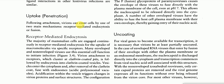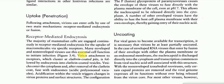Receptor-ligand interactions in other lentivirus infections are similar. Uptake: Following attachment, virions can enter cells by one of two mechanisms — receptor-mediated endocytosis or fusion. The majority of mammalian cells are continuously engaged in receptor-mediated endocytosis for the uptake of macromolecules via specific receptors. Many enveloped and non-enveloped viruses use this essential cell function to initiate infection. Virion attachment to receptors clusters at clathrin-coated pits, followed by endocytosis into clathrin-coated vesicles, which then enter the cytoplasm.